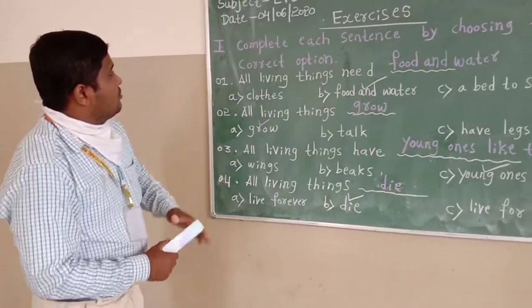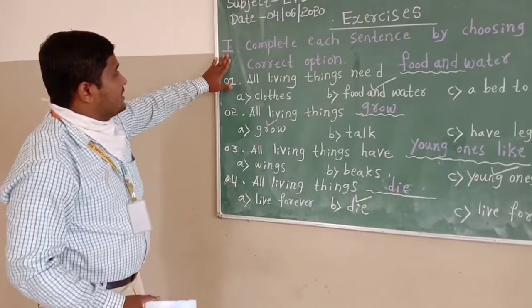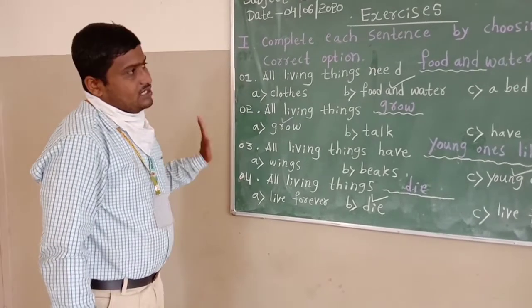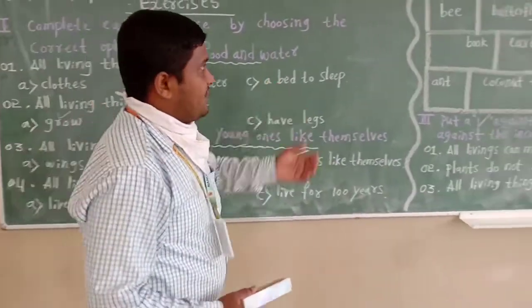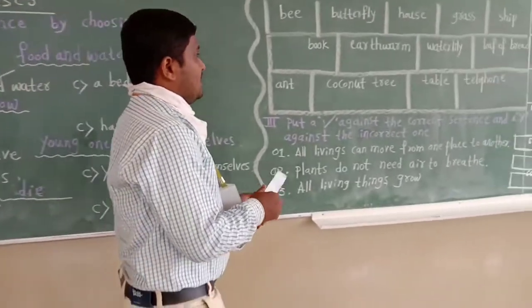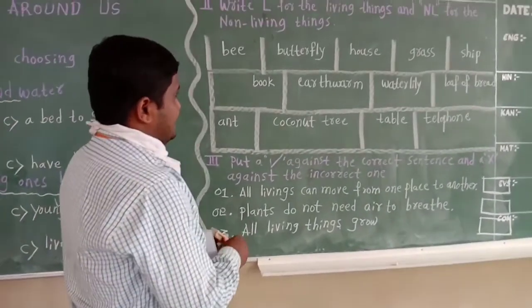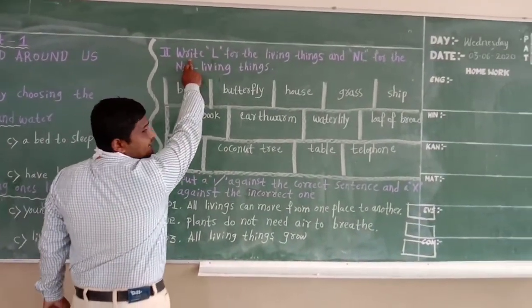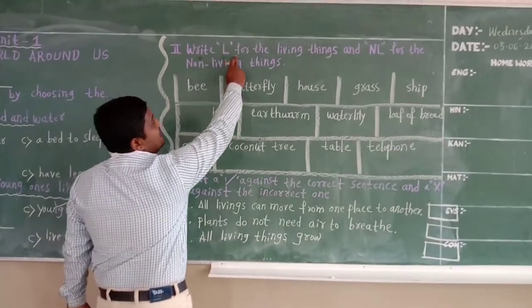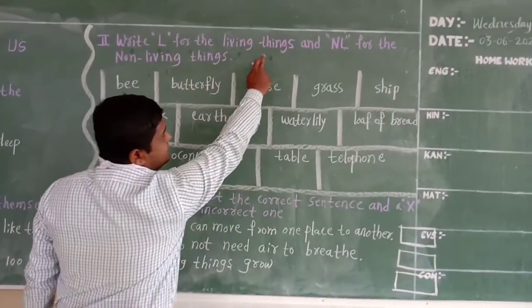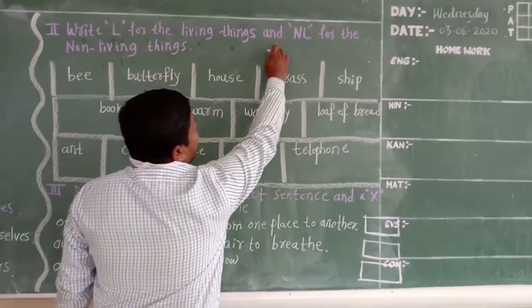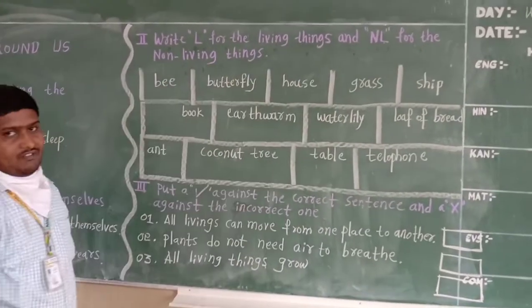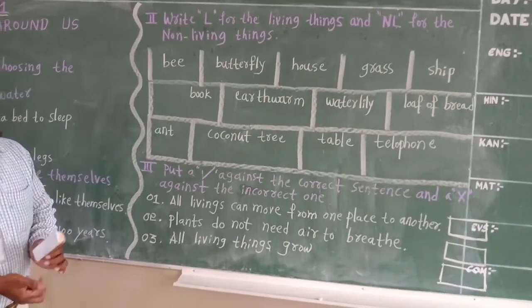Now you have completed the sentence by choosing the correct options. Next, the second exercise: write L for the living things and N for the non-living things.